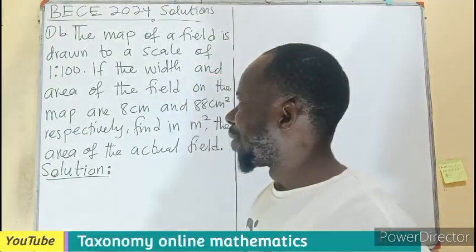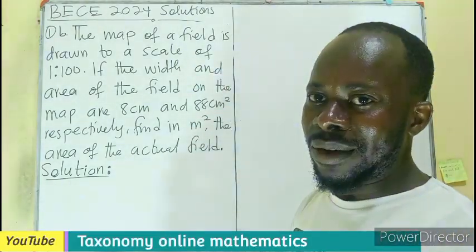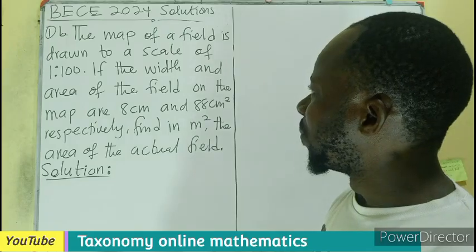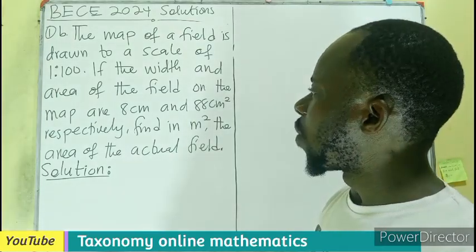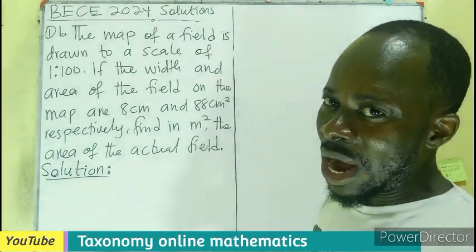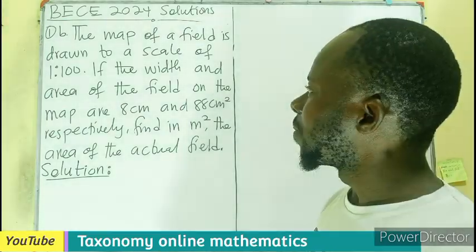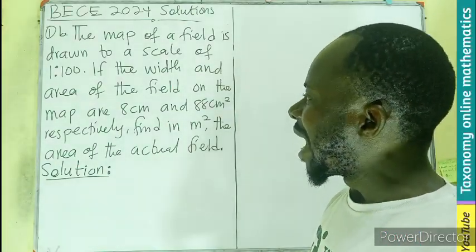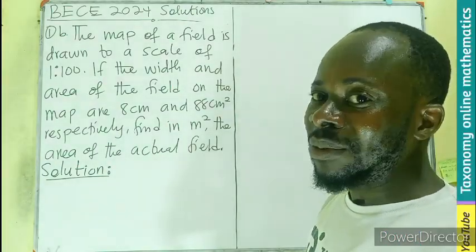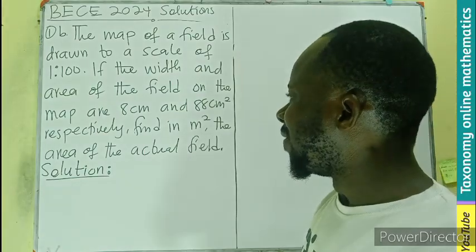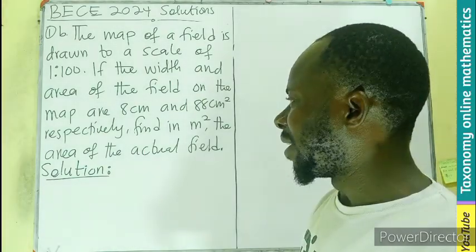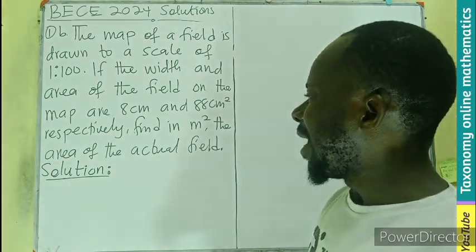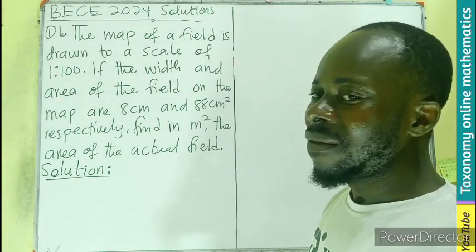Hello, welcome. Question number 1B, BEC 2024. The map of a field is drawn to a scale of 1 to 200. If the width and the area of the field on the map are 8 centimeters and 88 centimeters squared respectively, we have to find in meters squared the area of the actual field.